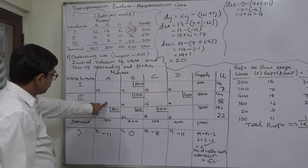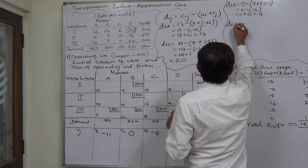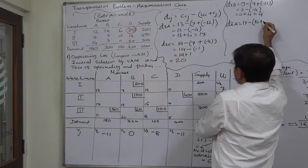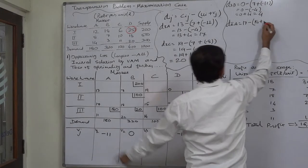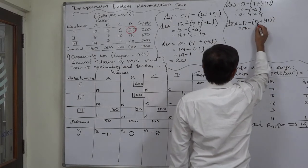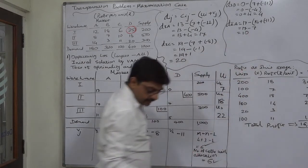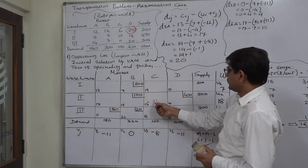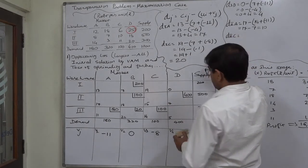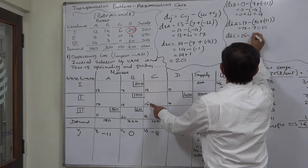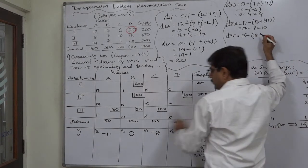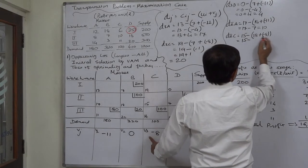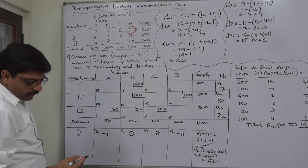Moving to the next row: D2A — C is 17, minus U2 (18), plus V1 (−11): 17 − 18 − (−11) = 17 − 18 + 11 = 10. That D value is also positive. In the same row, D2C: C is 15, minus U2 (18), plus V3 (−8): 15 − 18 − (−8) = 15 − 18 + 8 = 5. That value is also positive 5.